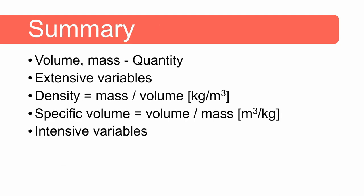So in summary, volume and mass are used to denote the quantity of a substance. Because we use volume and mass to denote a quantity of a substance they are extensive variables. Their magnitude depends on the amount of that substance.